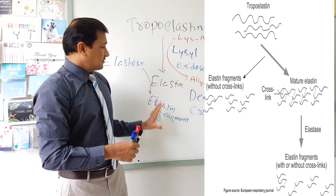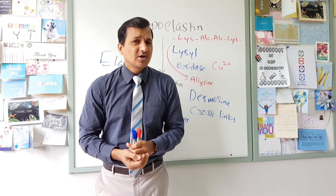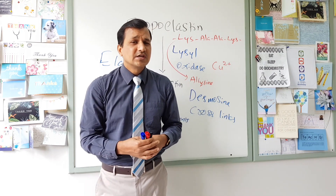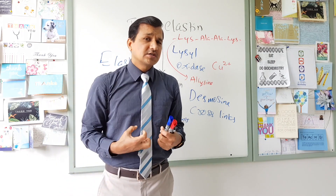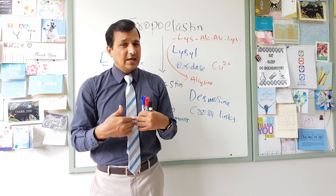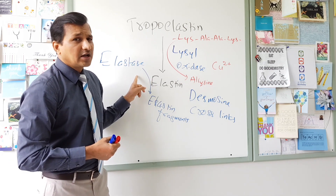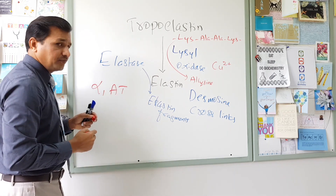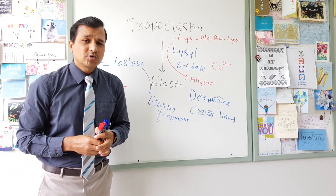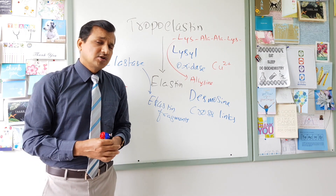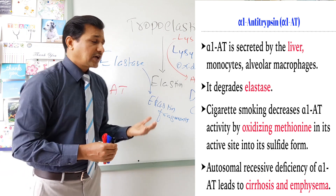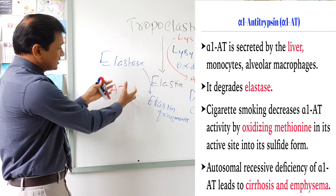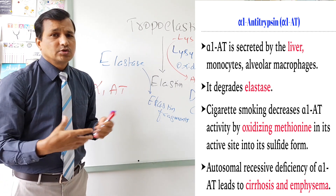Once elastase degrades elastin into fragments, we need to stop elastase function — otherwise it will go on degrading elastin, especially in the lungs. Once the job of neutrophil elastase is done, it must be neutralized by a protein called alpha-1 antitrypsin. Alpha-1 antitrypsin is synthesized predominantly by hepatocytes. It can also be synthesized by monocytes and macrophages, especially alveolar macrophages. Elastase is taken into the active site of alpha-1 antitrypsin and degraded into neutral fragments.